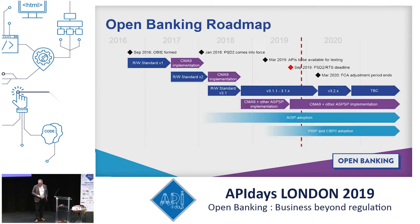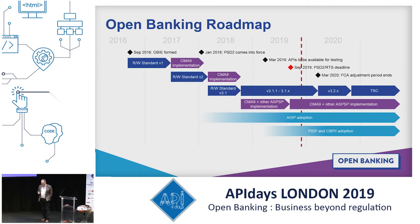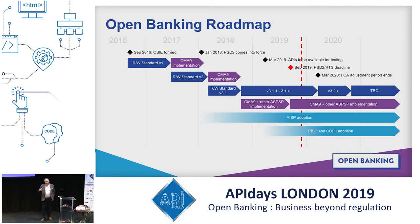I'll try to leave some time for questions at the end. We are two months after the 14th of September — the big red diamond there which indicated when all of the banks across Europe who wanted an exemption were supposed to have an exemption. The reality is the vast majority of banks in Europe — 6,000-odd banks — didn't meet that deadline. Certainly in the UK, the deadline hasn't been extended, but there is a six-month adjustment period to allow for effectively live proving.